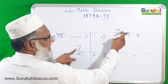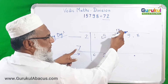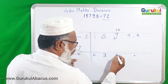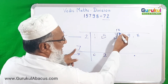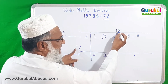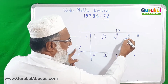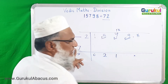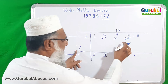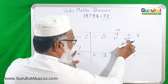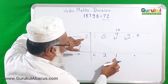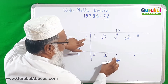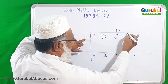7 twos are 14, which is bigger than 13, so we say 7 ones are 7. Subtracting 7 from 13 gives remaining 6. That 6 carries forward, giving us 69. From 69 we subtract the product of the previous answer digit and the flag digit — that is 1 times 2 equals 2 — so we get 67.